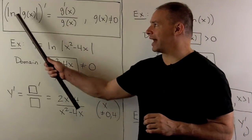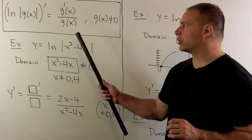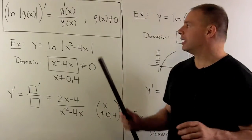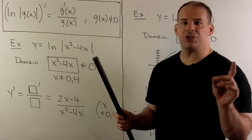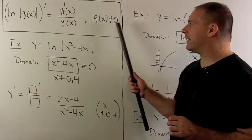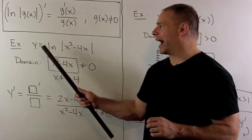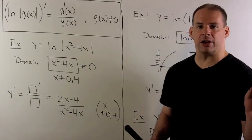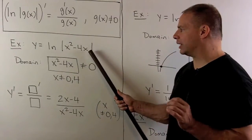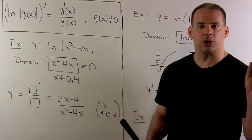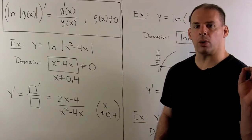Extending the rule: the derivative of natural log of the absolute value of g of x equals g prime of x over g of x, with the restriction that g of x is non-zero. The expression is the same as before, but we now allow negative values for g of x. For example, y equals natural log of the absolute value of x squared minus 4x: the domain is just x squared minus 4x not equal to zero, meaning x not equal to zero or four.